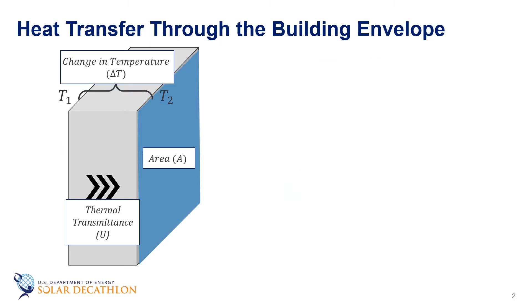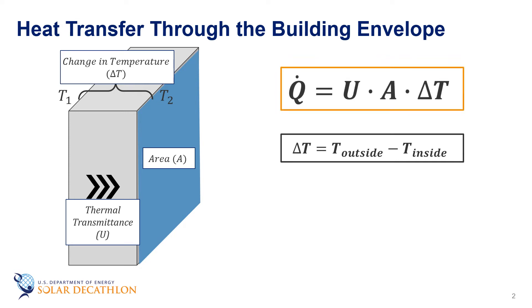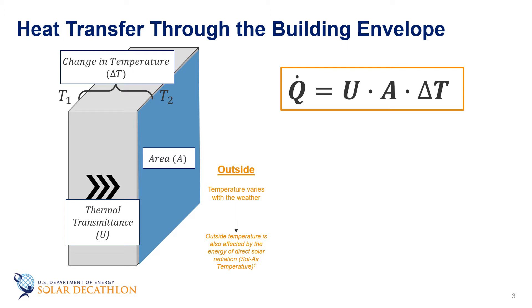Looking back at the Fourier's law equation, the rate of heat transfer through the wall is dependent on the delta T across the wall. Remember that Q dot is the rate of heat transfer at one instant in time based on the temperature difference from inside to outside. However, the outside temperature is constantly changing with the weather so the rate of heat transfer varies accordingly.